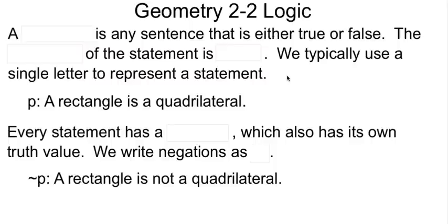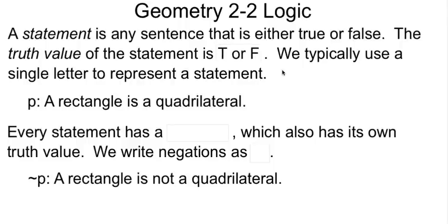This is Geometry Chapter 2, Section 2, in which we begin our study of formal logic. When we're doing logic, we're going to have a series of statements, sentences that will either be true or false. When we're talking about whether they're true or false, what we're talking about is their truth value. Rather than write the whole word true or false, like on a true-false test, we've just shortened it down to T and F.